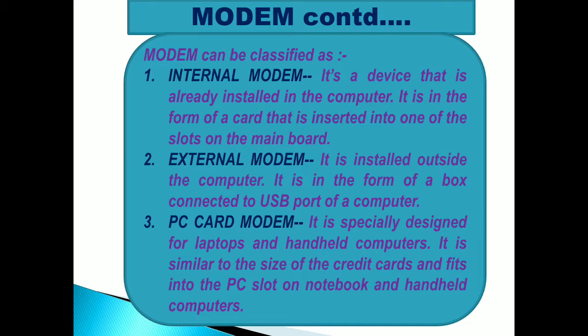There are different types of modem. First is the internal modem — a device already installed in a computer in the form of a card inserted into a slot on the main board. Second is the external modem, installed outside the computer as a box connected to the USB port. Third is the PC card modem, specially designed for laptops and handheld computers, similar in size to credit cards, fitting into the PC slot.